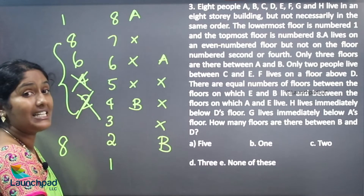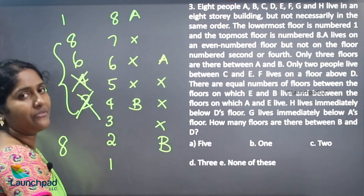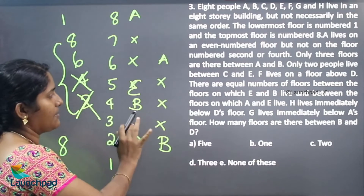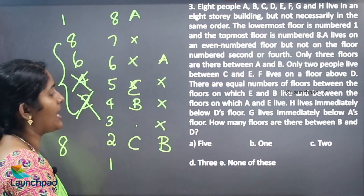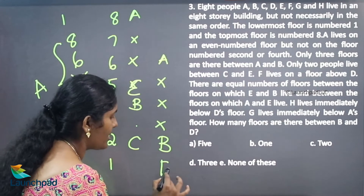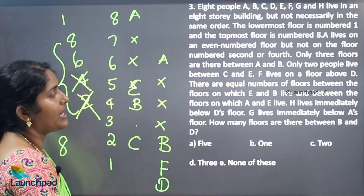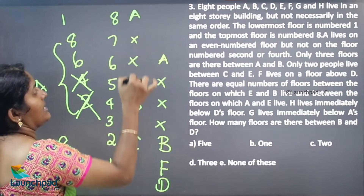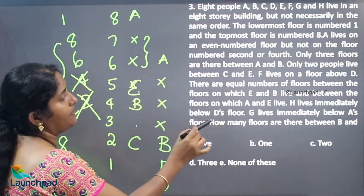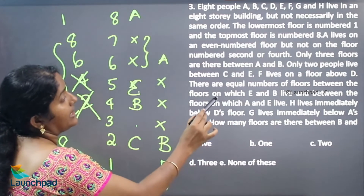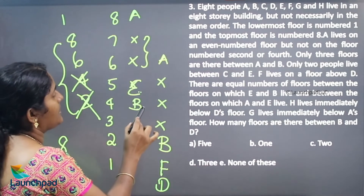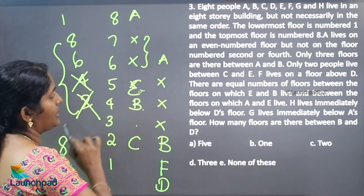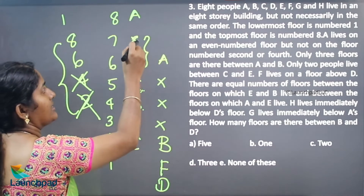Only 2 people live between C and A. So C and E — only 2 people between C and E. If I am placing C here, E will be here with 2 persons between them. After that, F lives on the floor above D. Now, there are equal number of floors between E and B, and between A and E. A and E have 2 floors between them — the same value as between E and B. If I place E here, it is not possible to fit the floor arrangement.